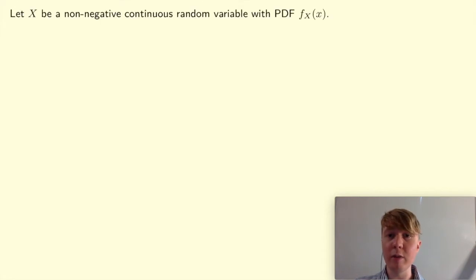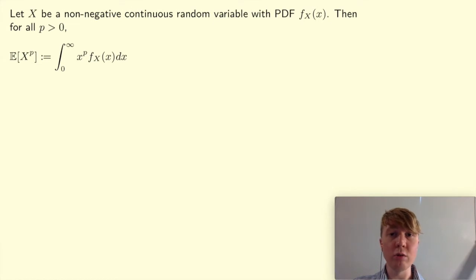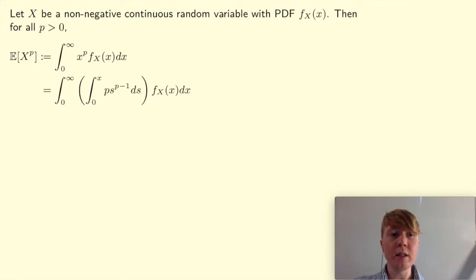First, we'll prove this in the continuous case where you've got a pdf, then we'll look at the more general case with measure theory, and finally the discrete case. If we've got a non-negative continuous random variable with pdf f_X(x), then by definition, for p greater than 0, the expectation of x to the power of p is the integral of x to the power of p multiplied by the pdf. The trick is to write x to the power of p as a suitable integral: the integral between 0 and x of p s to the p minus 1 with respect to s. It's easy to check you get x to the power of p minus 0 to the power of p.